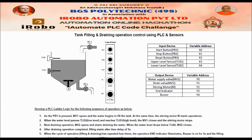When filling is completed, the next draining operation starts: MV2 opens and begins draining the water. When the water level drops below TLB2, MV2 closes — meaning draining stops. When MV2 closes and draining is completed, there is a delay of 5 seconds before filling starts again, repeating from step 1 to step 3.